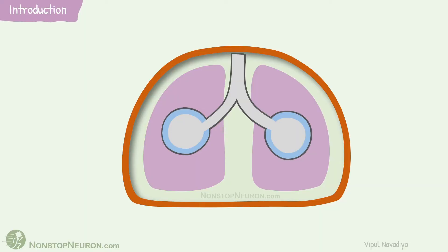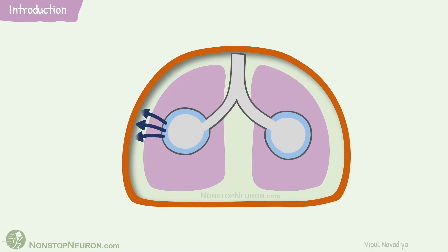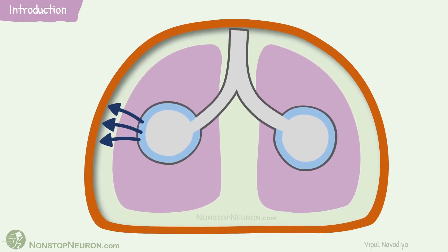As usual we have a schematic diagram of the lung. This is lung parenchyma, this is alveoli, and this is pleura. Here, transpulmonary pressure is the pressure across the alveolar wall — it's the pressure difference between alveolar pressure and pleural pressure. As this pressure increases, the lungs expand. In other words, with increasing transpulmonary pressure, lung volume increases.